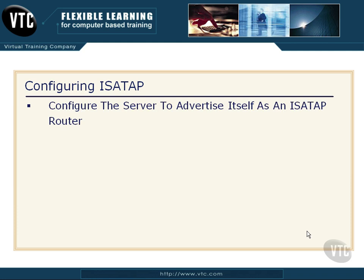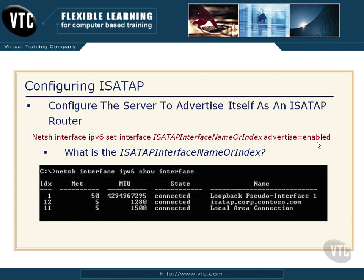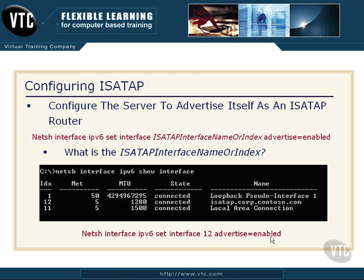First step: we need to configure our server to advertise itself as an ISATAP router. Here's the command to do that — net sh interface IPv6 set interface, and then you input the ISATAP interface name or index, then set advertise equal to enabled. To find the interface name or index, at a command prompt type: net sh interface IPv6 show interface, and you'll get this printout. Simply look at the index — 12 is for the ISATAP interface. So we would execute: set interface 12 advertise equals enabled.